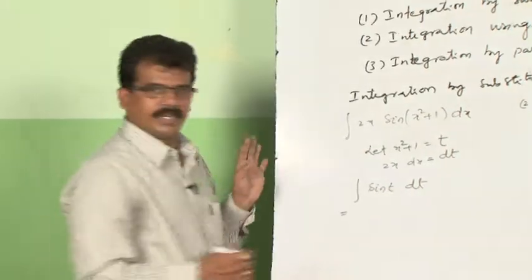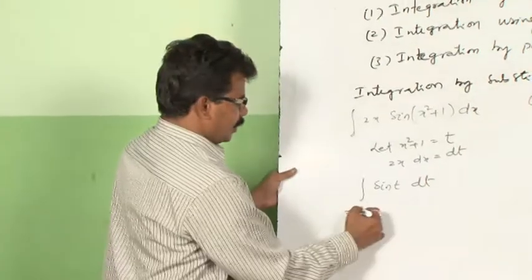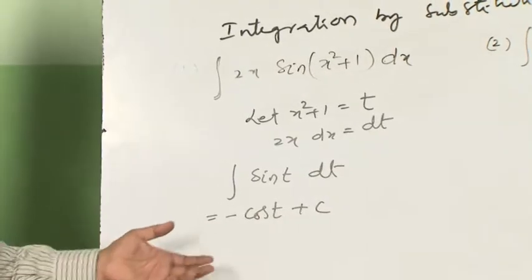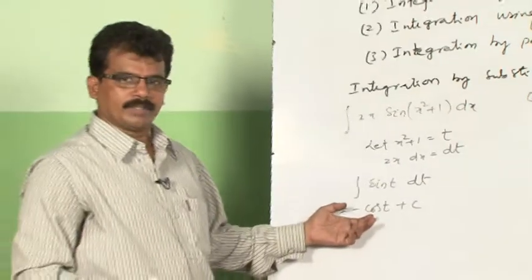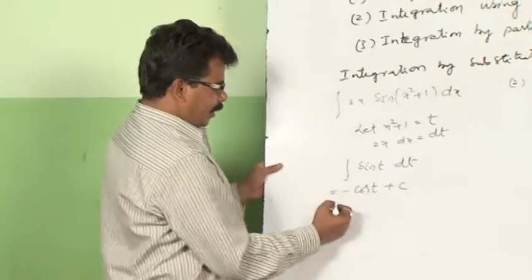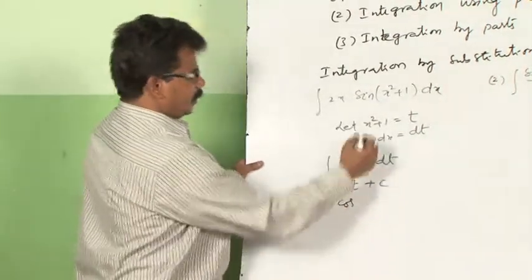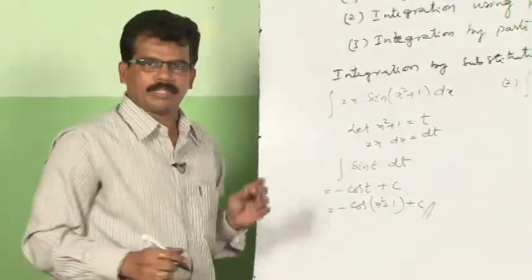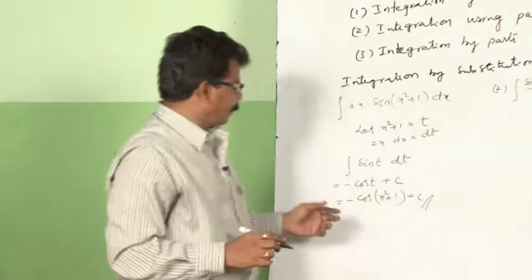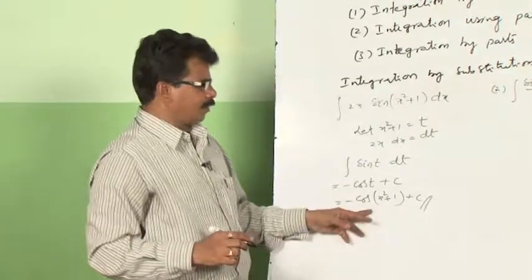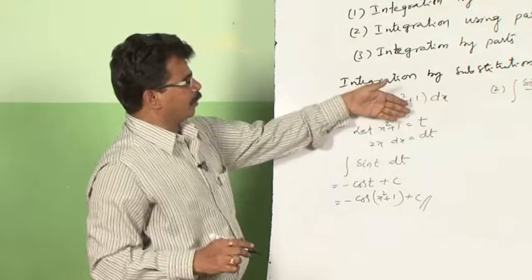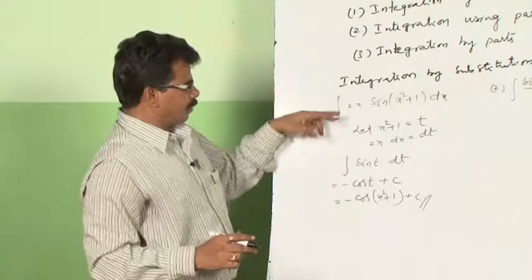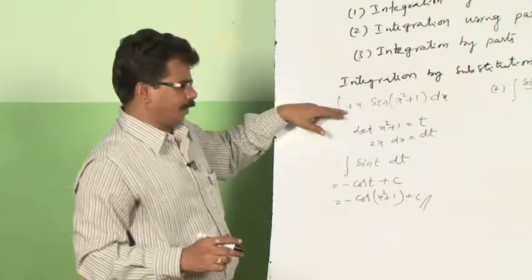x² + 1 I have assumed as t, then the derivative of x² + 1 is 2x dx = dt. I have substituted these values here: 2x dx written as dt and sin(x² + 1) as sin(t). Therefore, integral of sin(t) dt is minus cos(t) plus c. We should not leave here because the function is not in terms of x. So the final answer is minus cos(x² + 1) plus c. Whenever you write the solution, just check once again whether the answer is written in terms of x or not. Whatever variable you take — t, y, and so on — write the answer in the variable in which the function is given.